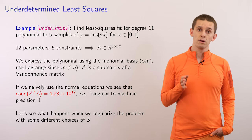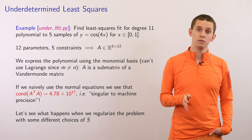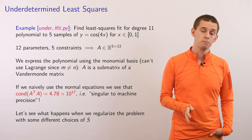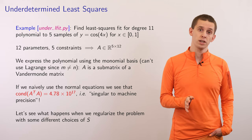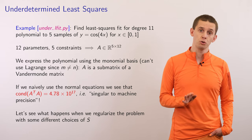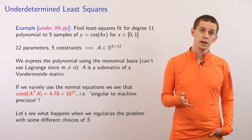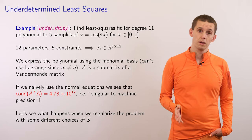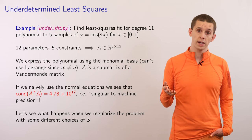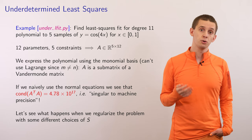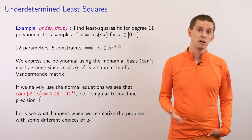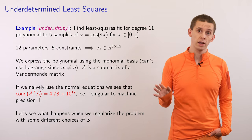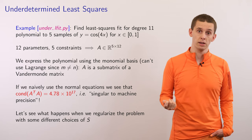If we try and calculate the condition number of the matrix A transpose A, it works out to be 4.78 times 10 to the 17. This essentially tells us that our matrix A transpose A is singular, just as we expect due to its rank deficiency. This value around 10 to the 17 tells us we're seeing rounding error — essentially 1 over machine precision. If we ever see condition numbers of this scale, our numerical routines are saying that to within rounding error, this matrix is singular.